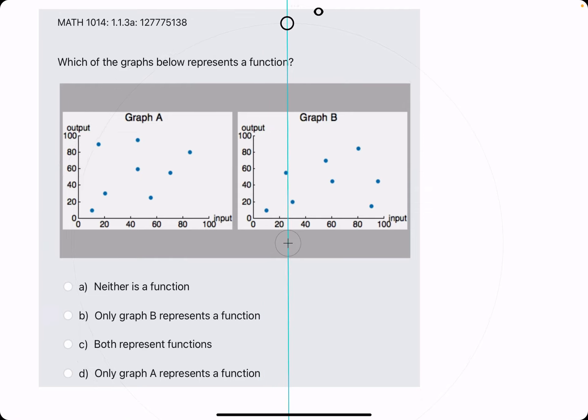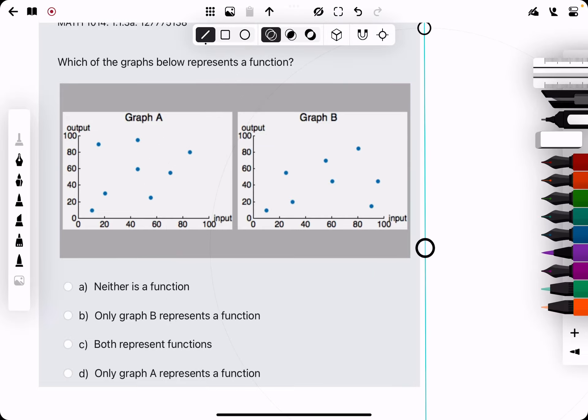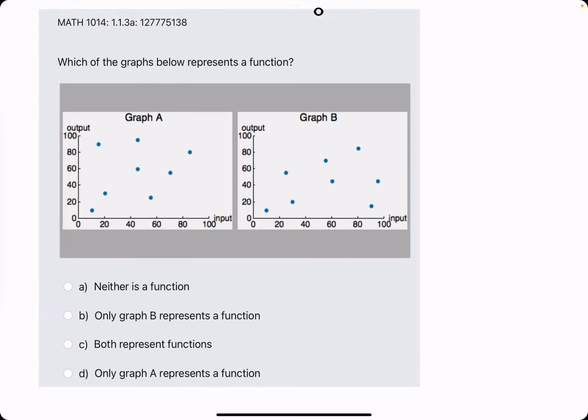Bam, bam, bam. These two are close, but still, no, we're good. All right, so it doesn't look like any two points were on the same vertical line for B. So that means B is a function. So only graph B represents a function.